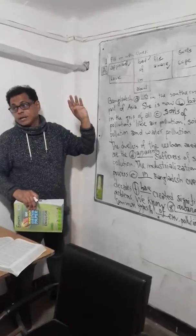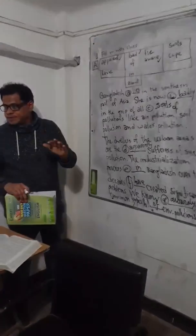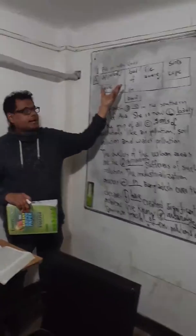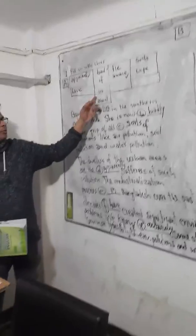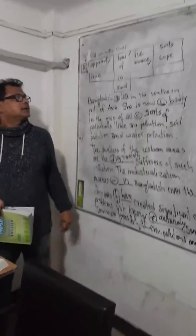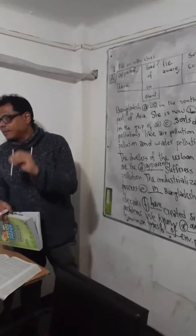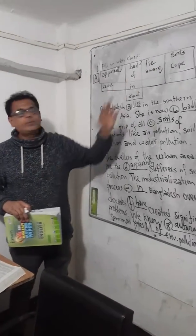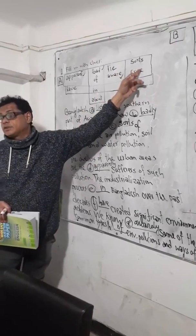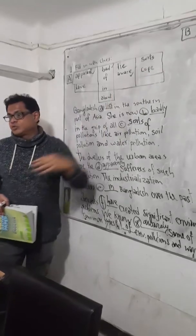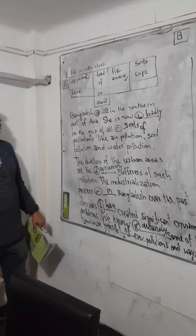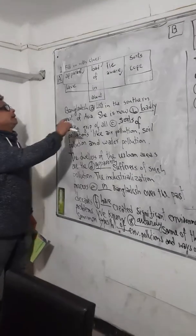We must also have a sense of meaning. 'Apparent' means very much vivid. 'Have' indicates possession. 'Bad' is an adjective. 'In' and 'about' are prepositions. 'Lie' means having something somewhere — to be located. 'Aware' means very much conscious. 'Source' means types or kinds. And 'cope' means to adjust with somebody or somewhere.